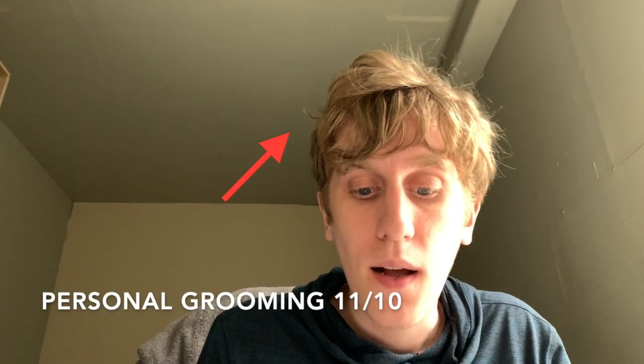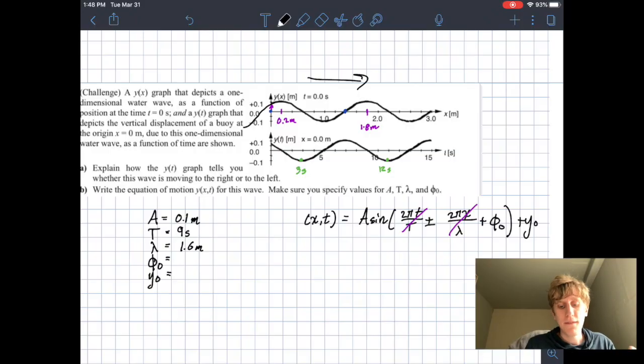So I totally messed this part up the first time I did it, so we're redoing it again in my lovely room. So we're interested in finding the phase constant for this wave. Remember, the phase constant just tells us where the wave starts. It doesn't change the shape or speed of the wave. The easiest way to do this is to pick a point on the wave where you know the value of the sine function.